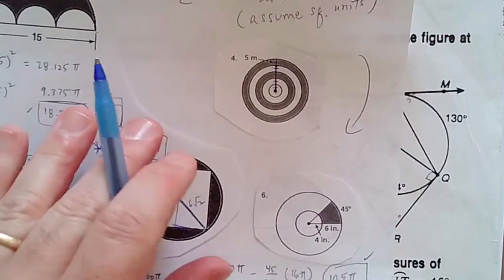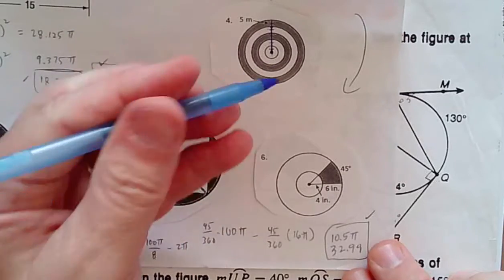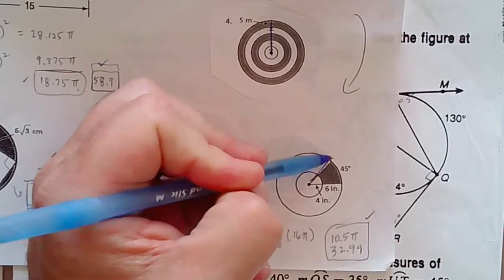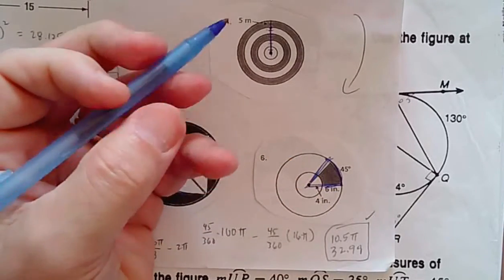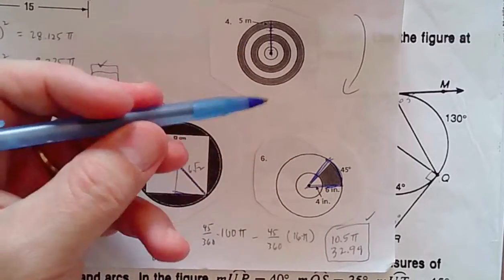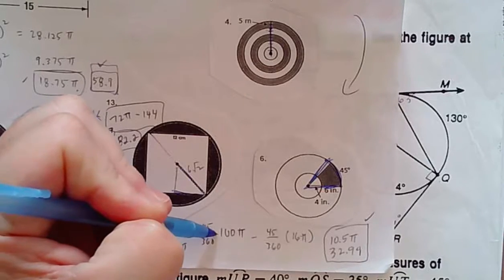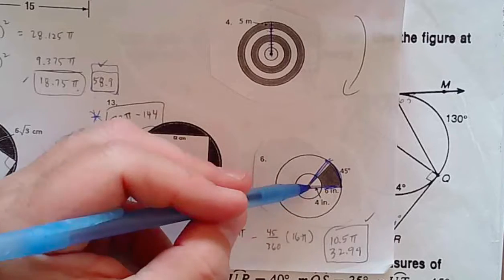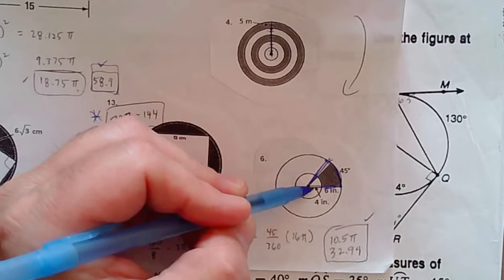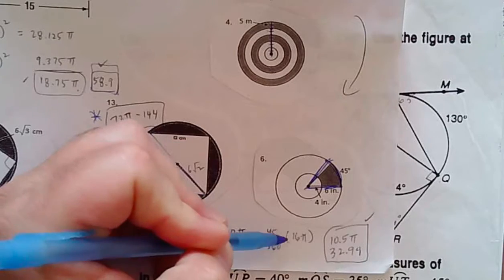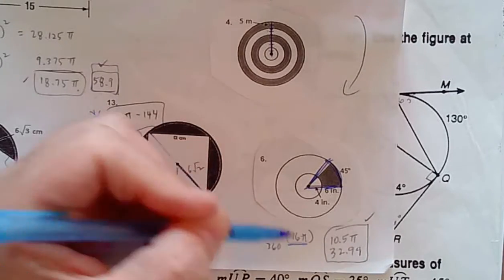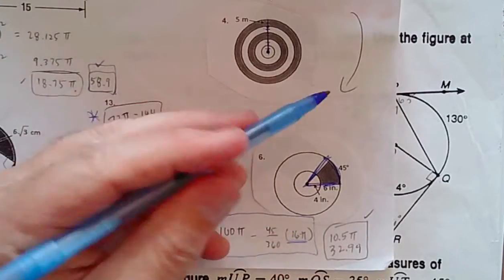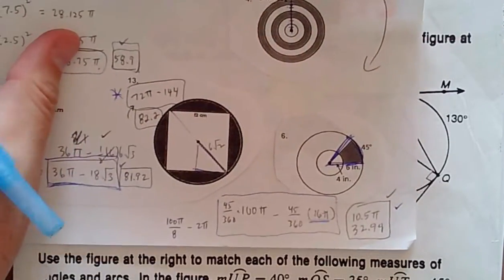And then the last question. I think I did this one for those who were at the virtual class the day it was due. The area of the whole thing is 45 over 360 times 100π, which is because the radius is 10. And then I'm going to subtract the little part, which is 45 over 360 times 16π, because the radius is 4. And this is the answer if you simplify it, to about 10.5π or around 33.